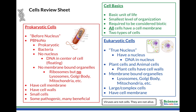Cells basics. First of all, cells are the basic unit of life. They are the smallest unit of life and the smallest level of organization in biology. Atoms and molecules are smaller, but when we're dealing with biology, we're dealing with things that are alive. A cell is the smallest thing that can be considered alive. Something needs to be made of cells in order to be considered alive, which makes sense because the cell is the smallest unit of life.